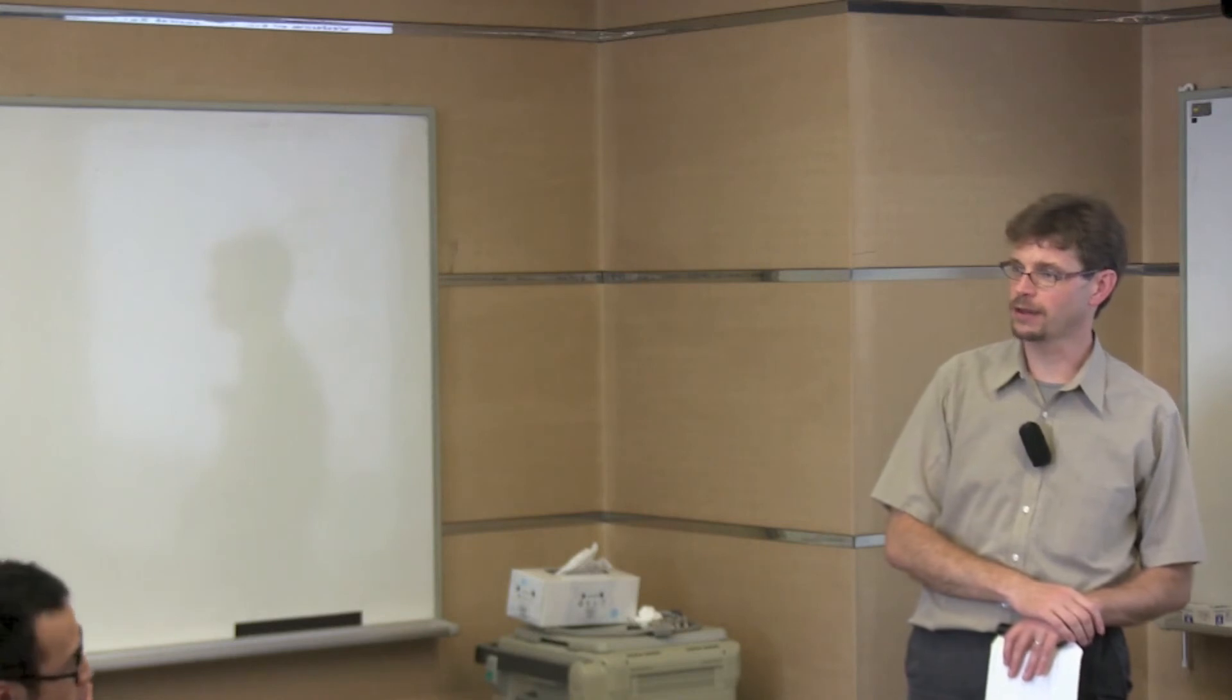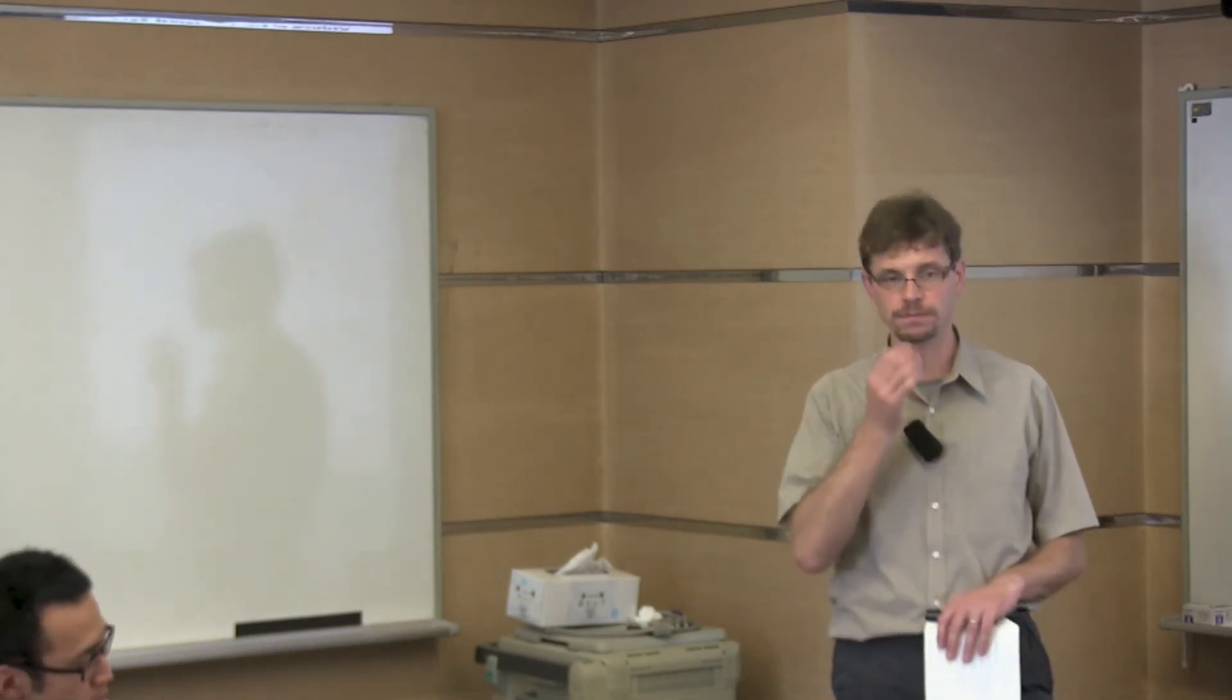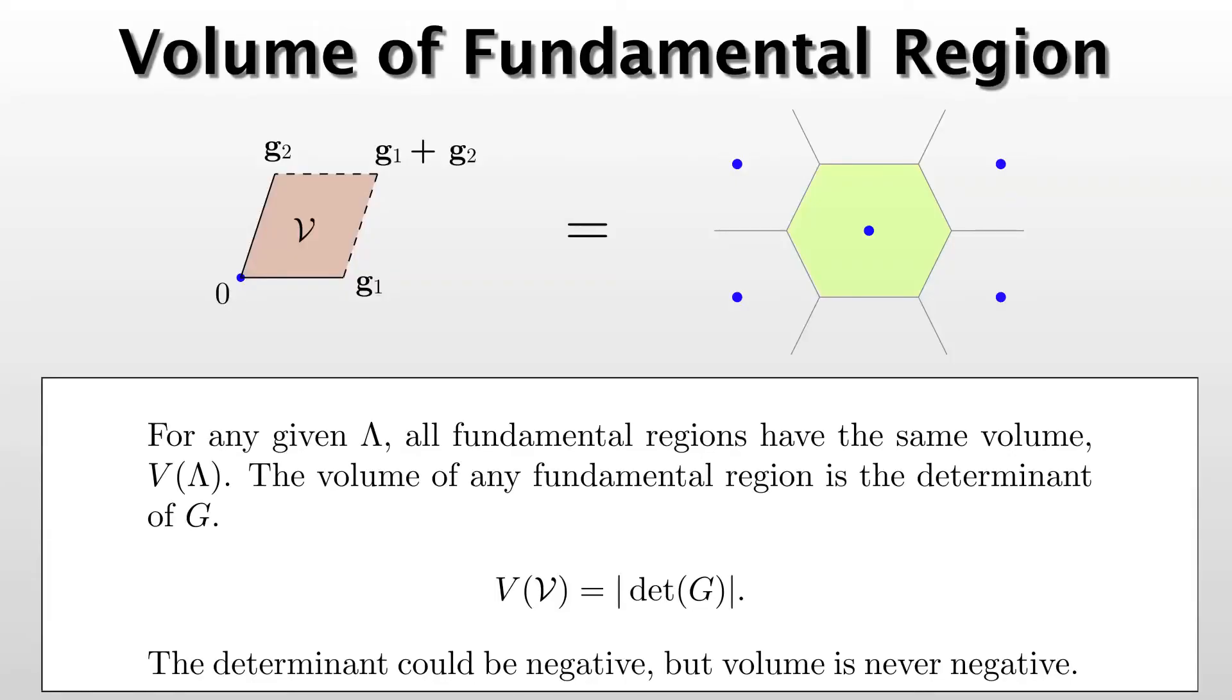Now we have two important fundamental regions. The parallel piped and the Voronoi region. We could have other strange looking shapes as well. But since taking this shape and translating it through the space is supposed to generate the whole space, this implies that the volume of all the fundamental regions is the same. So for a given lattice, all fundamental regions have the same volume.